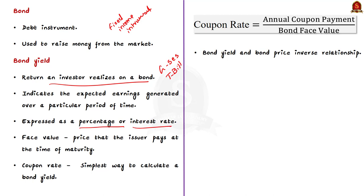When investors buy bonds, they essentially lend money to the bond issuer. In return, the bond issuer agrees to pay the investor interest on the bond through the life of the bond and repays the face value upon maturity. The face value of the bond is the price the issuer pays at the time of maturity. The simplest way to calculate a bond yield is to divide its coupon payment by the face value — this is called the coupon rate.